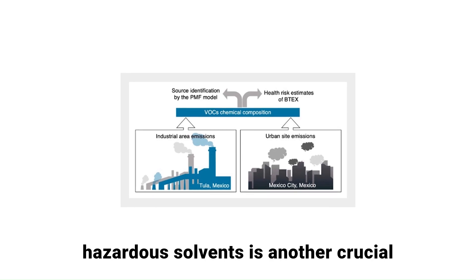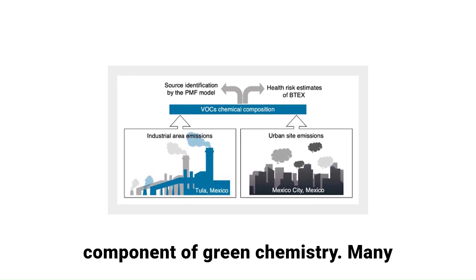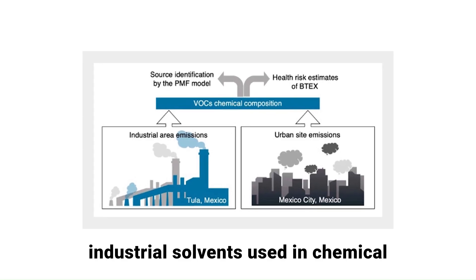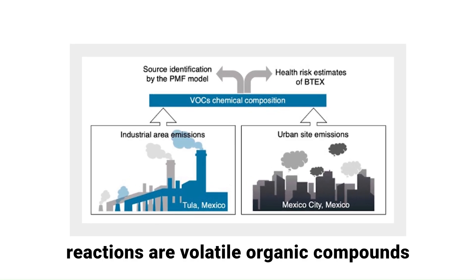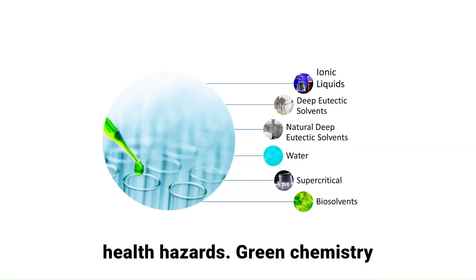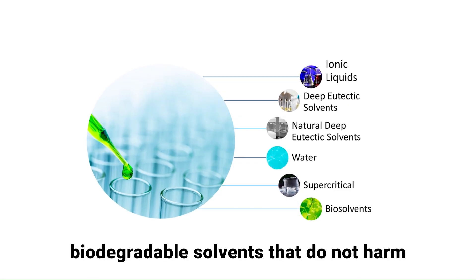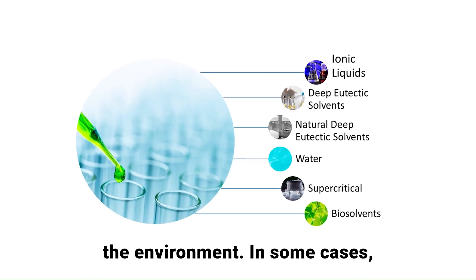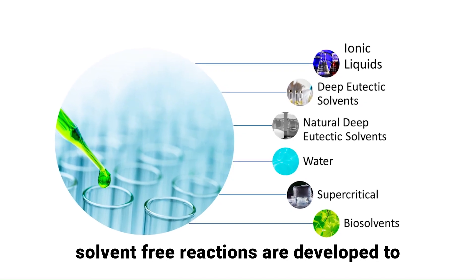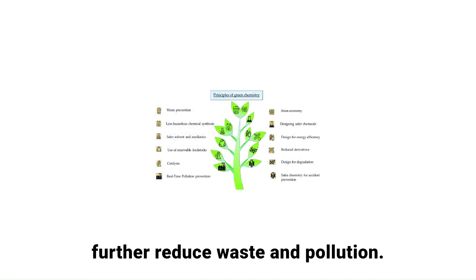The elimination of hazardous solvents is another crucial component of green chemistry. Many industrial solvents used in chemical reactions are volatile organic compounds that contribute to air pollution and health hazards. Green chemistry focuses on using water-based or biodegradable solvents that do not harm the environment. In some cases, solvent-free reactions are developed to further reduce waste and pollution.